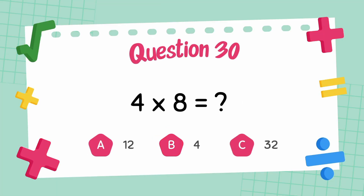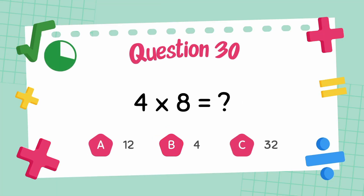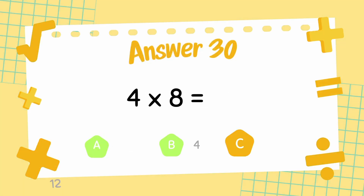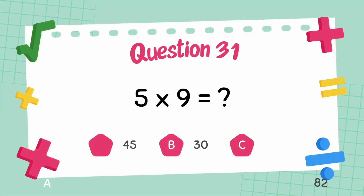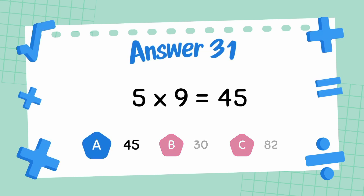What is 4 multiply 8? The answer is 32. What is 5 multiply 9? The answer is 45.